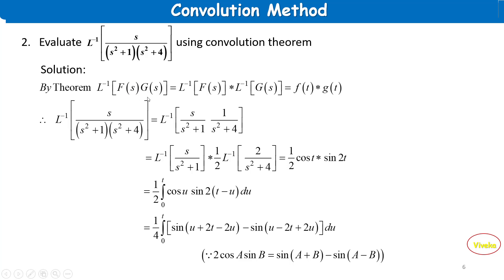We identify L⁻¹{ s/(s²+1) } and L⁻¹{ 1/(s²+4) }. We multiply by (1/2) to adjust: (1/2)·L⁻¹{ 2/(s²+4) }. The first inverse is cos(t) and the second is sin(2t).